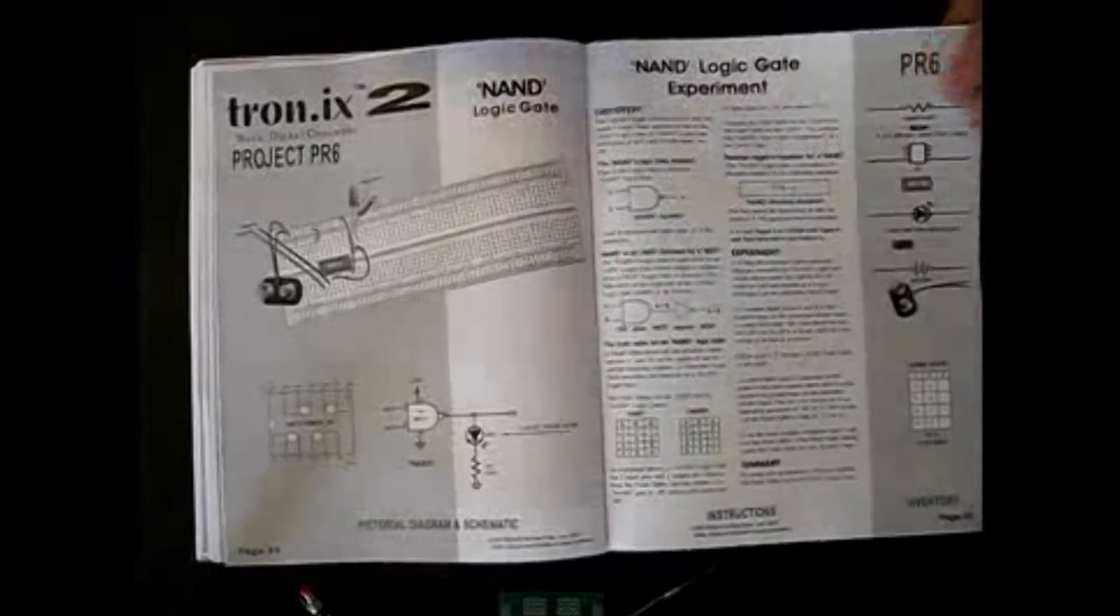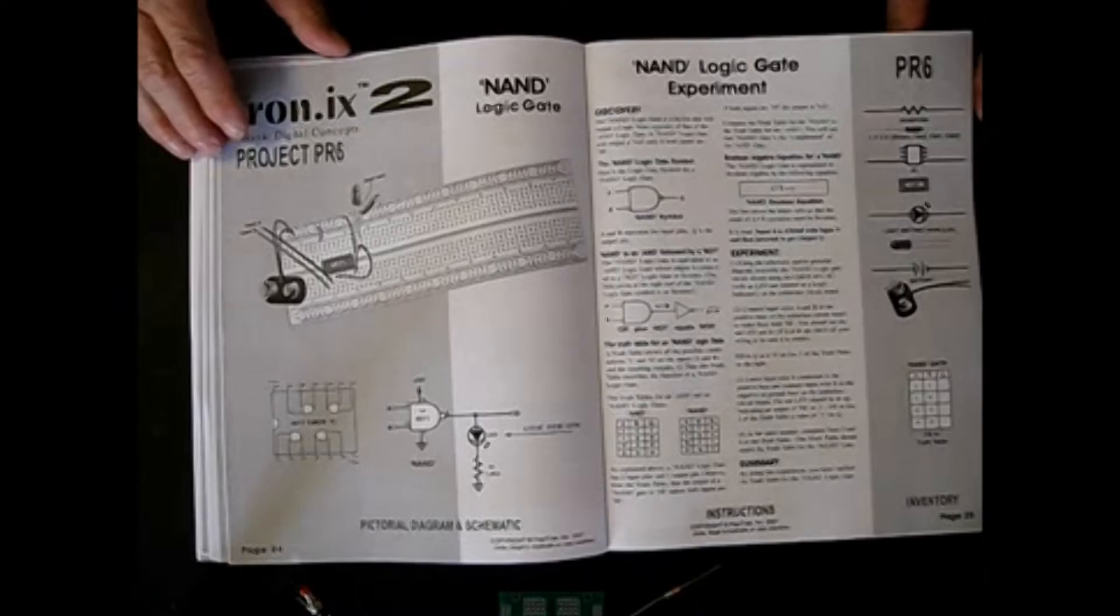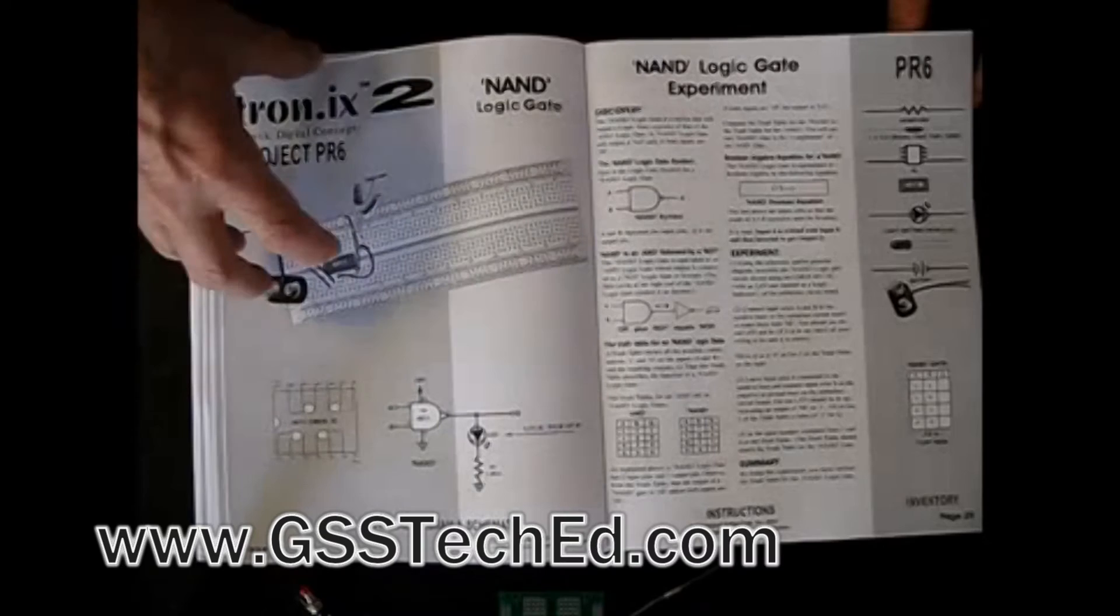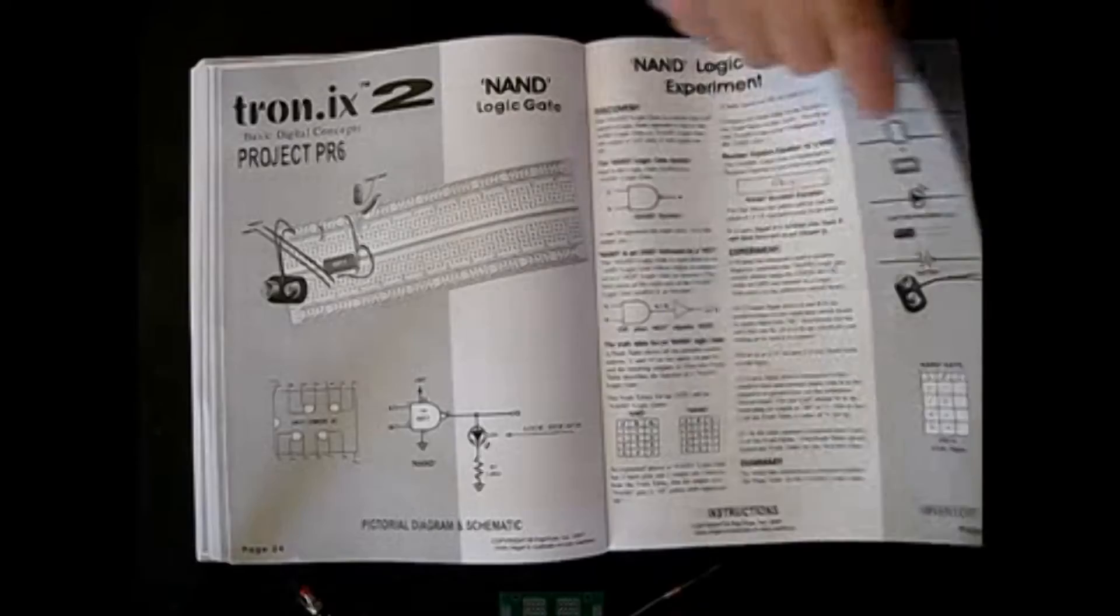But we tell you, you really don't need to build all your logic circuits with discrete components. You can buy integrated circuits that have these gates built into them. So we demonstrate what's the NAND gate, and we compare it to the AND gate.